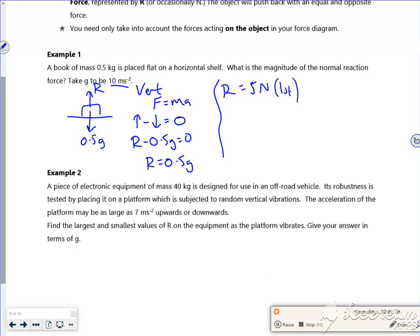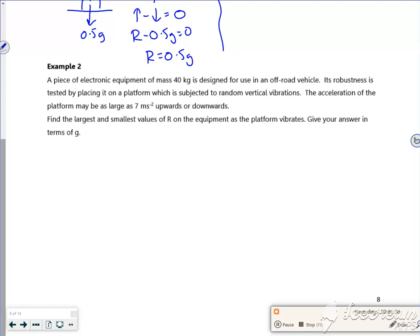We're just setting these up all the time. A piece of electronic equipment of mass 40 kilos is designed for use in an off-road vehicle. Its robustness is tested by placing it on a platform which is subjected to random vertical vibrations. The acceleration may be as large as 7 up or down. Find the largest and smallest values.